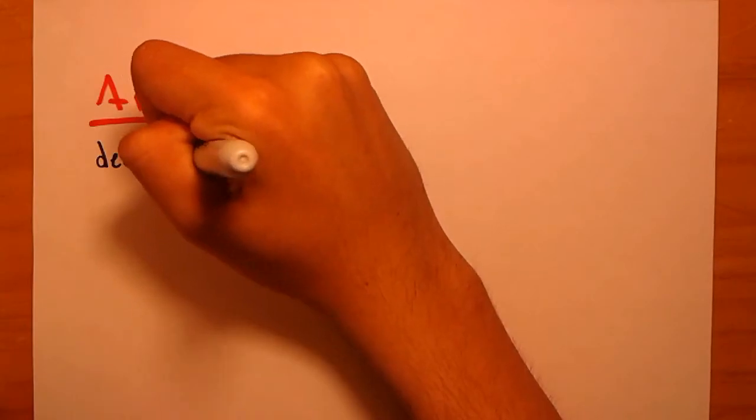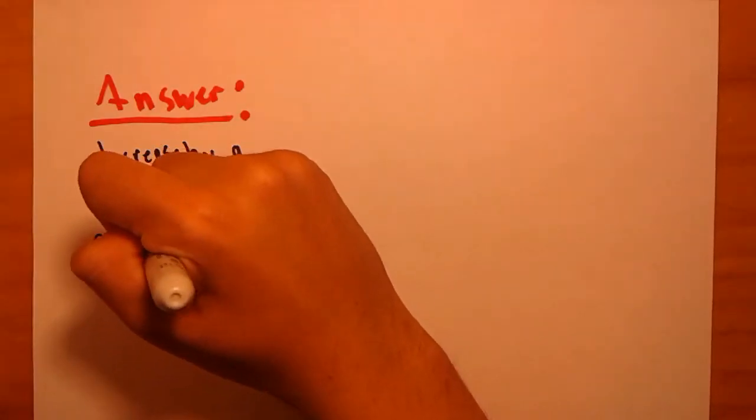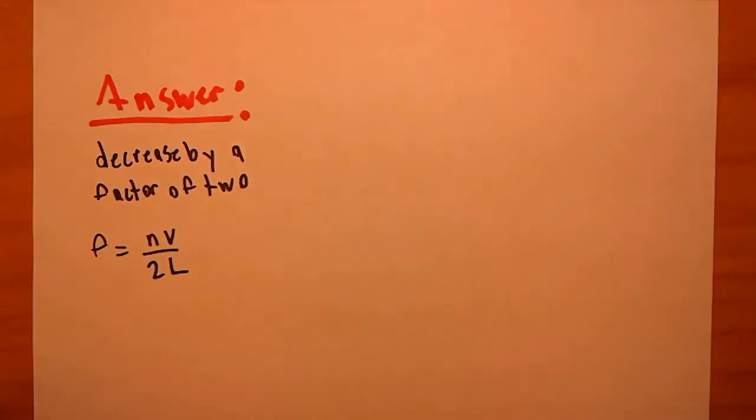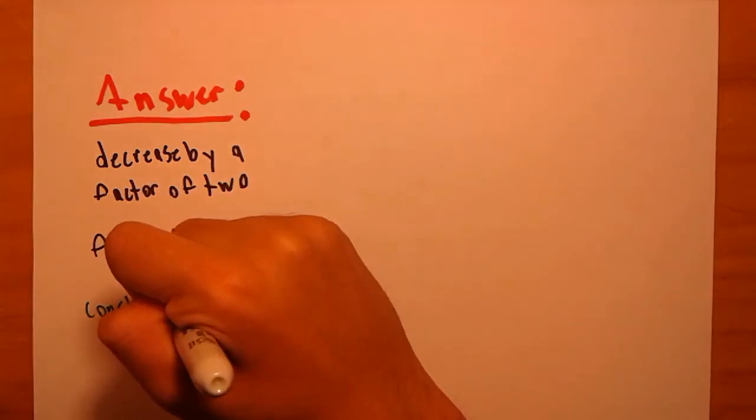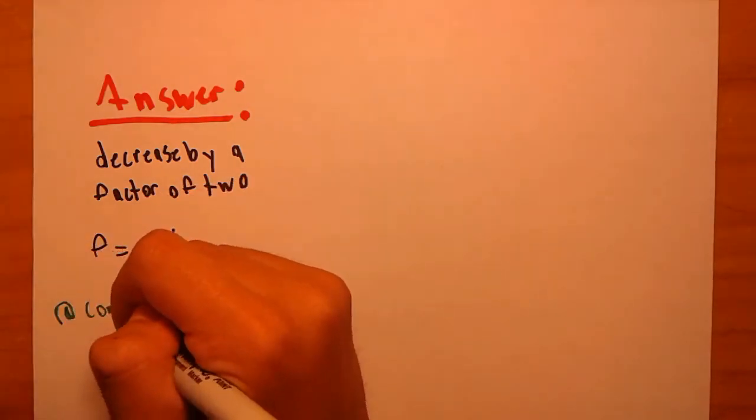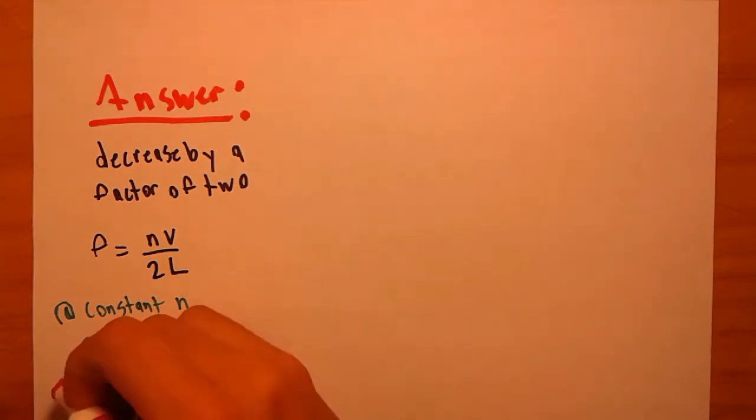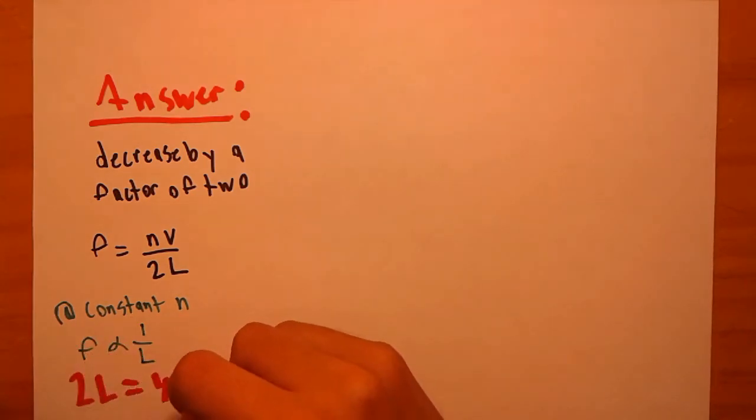Once again, the correct answer is that the frequency decreases by a factor of two. Here is an algebraic representation using the formula frequency equals the harmonic number times velocity divided by two times the length. As previously described, both the harmonic number and velocity remain constant. Thus, the frequency and length of the tube are inversely proportional. Therefore, if the length is doubled, as it was when Jacob covered all of the openings on the recorder, then the frequency is halved.